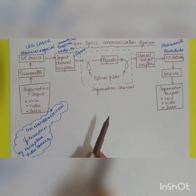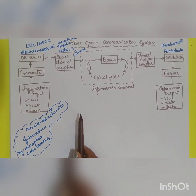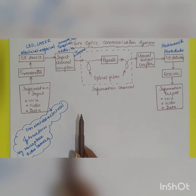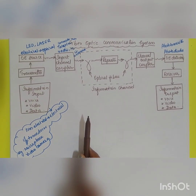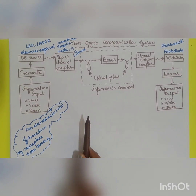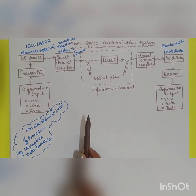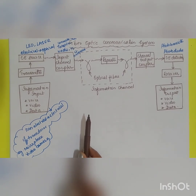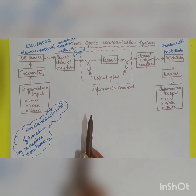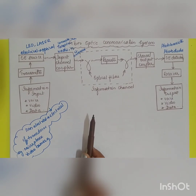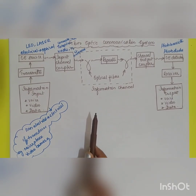The next topic in module 5 is fiber optic communication system. The communication system that uses a high carrier frequency near the infrared region of the visible spectrum is called an optical communication system. The optical communication system in general can be called a light wave system. A light wave system that employs optical fiber as the channel for information transmission is called the fiber optic communication system.